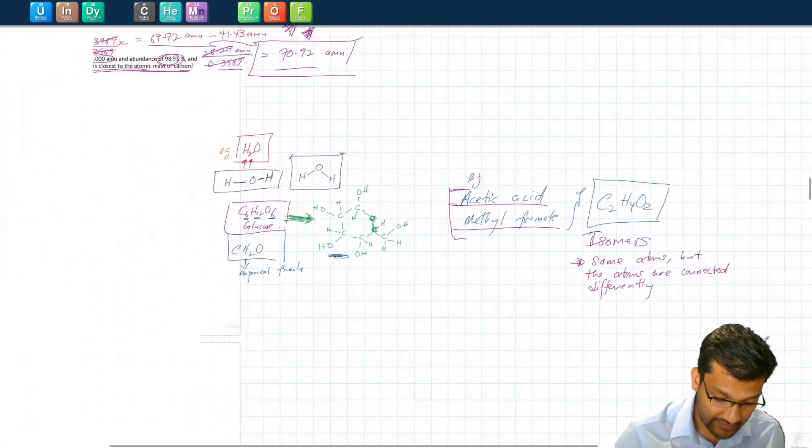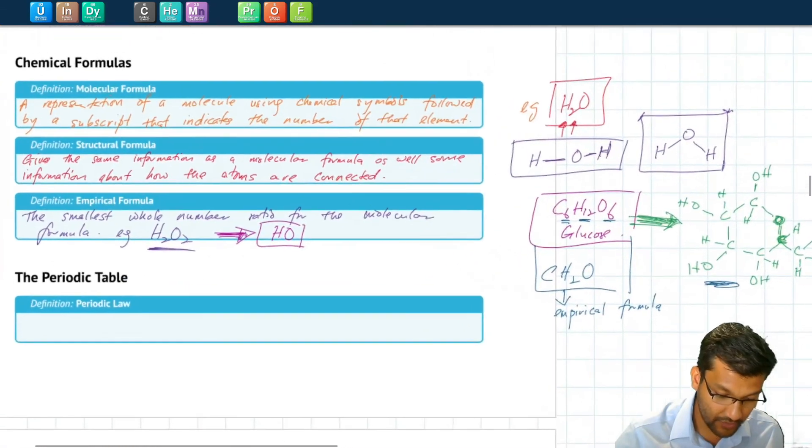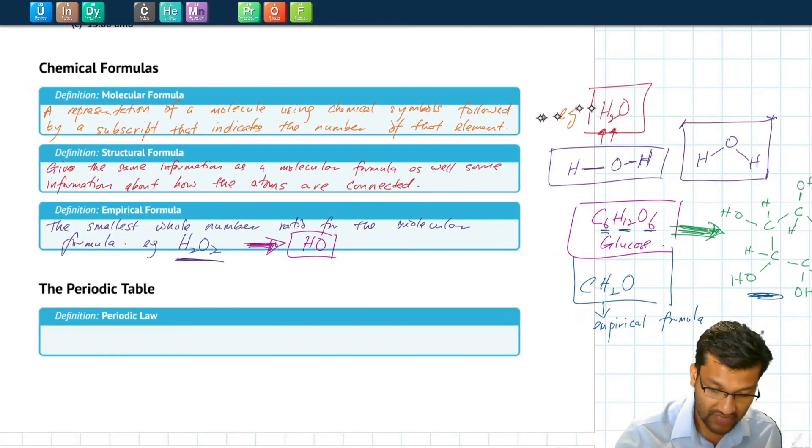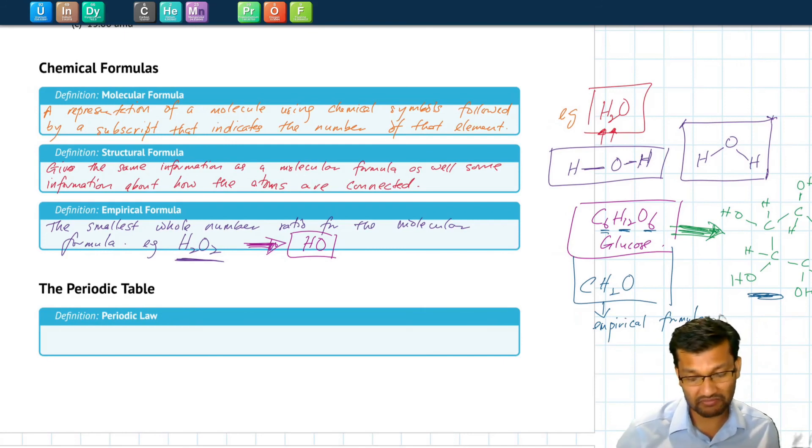But that will just bring us to the end of chemical formulas. There are molecular formulas, structural formulas that give us a little bit more information, and empirical formulas that give us fewer and less information but are also sometimes very useful. I will see you in the next video when we talk about the periodic table. See you then. Bye.